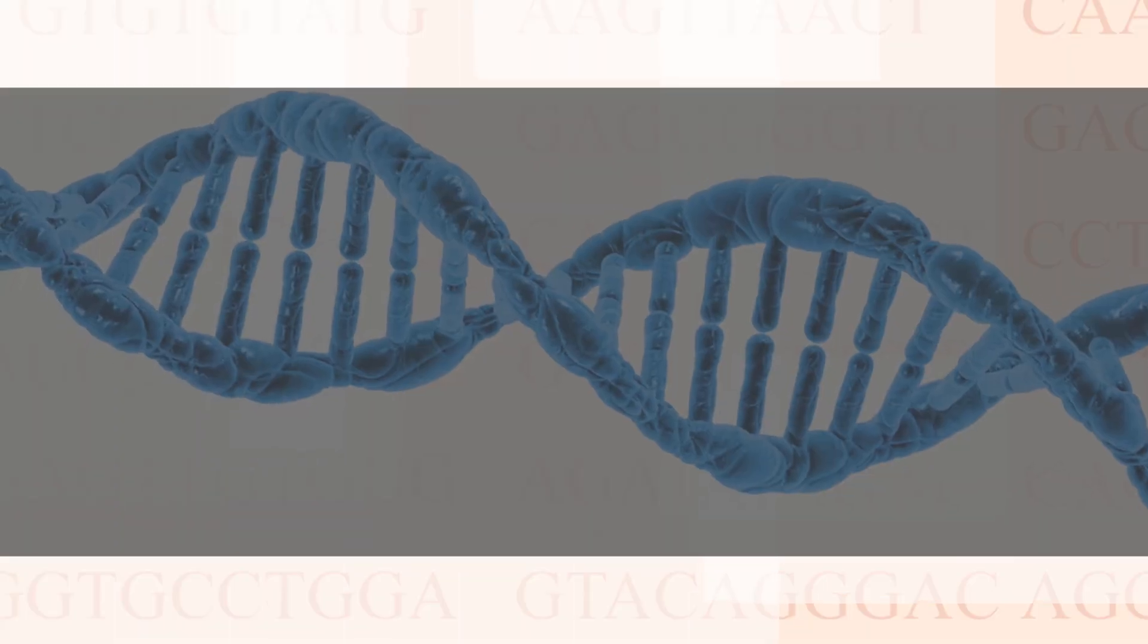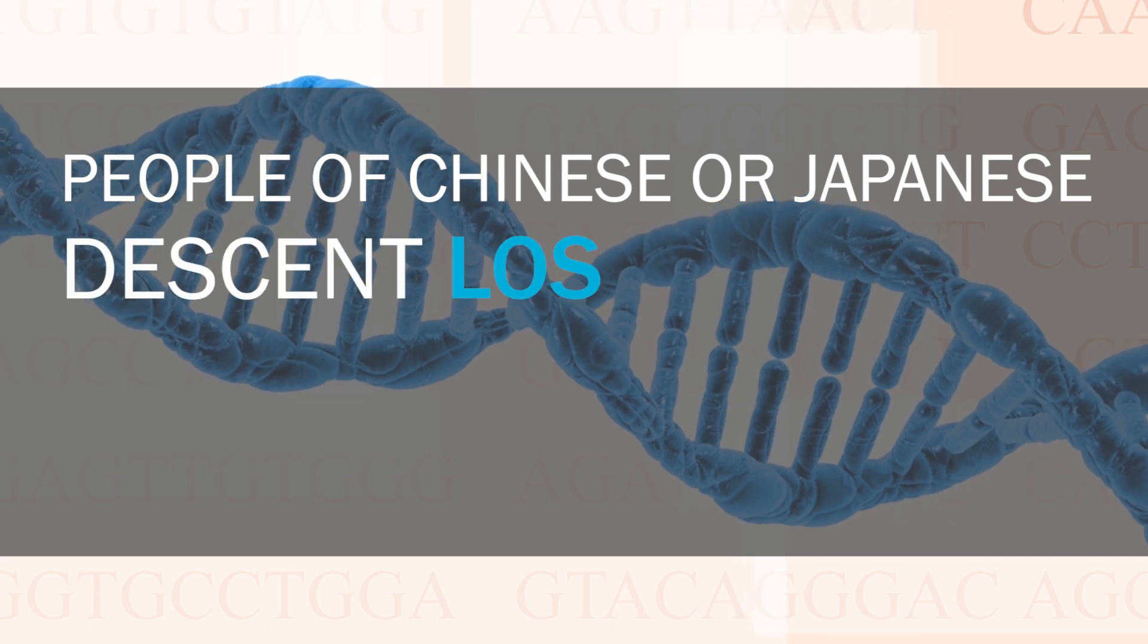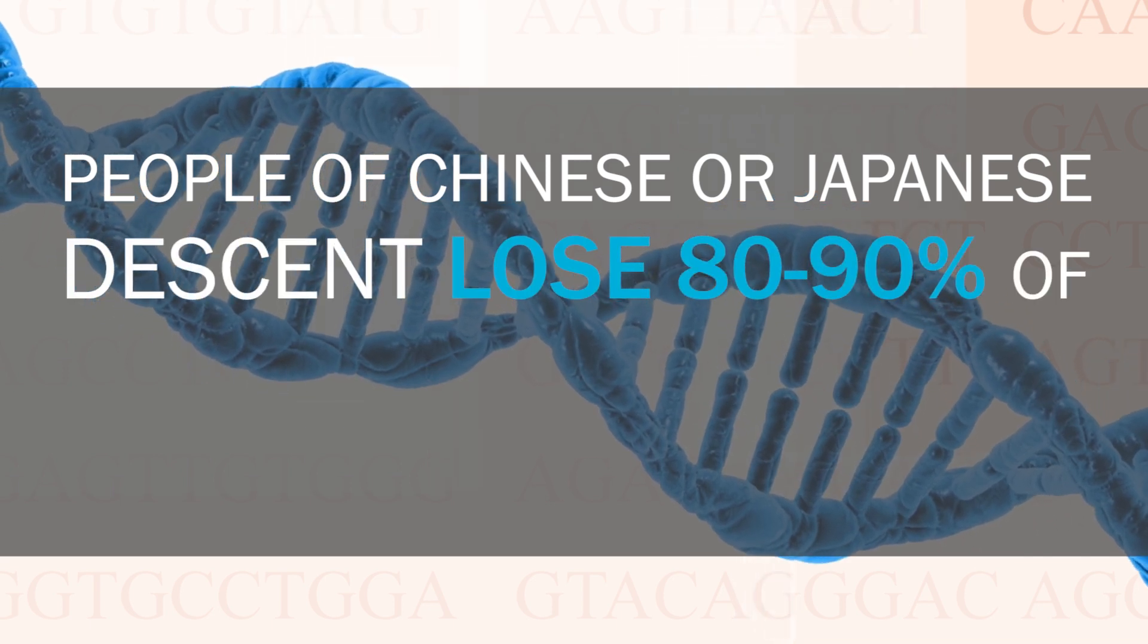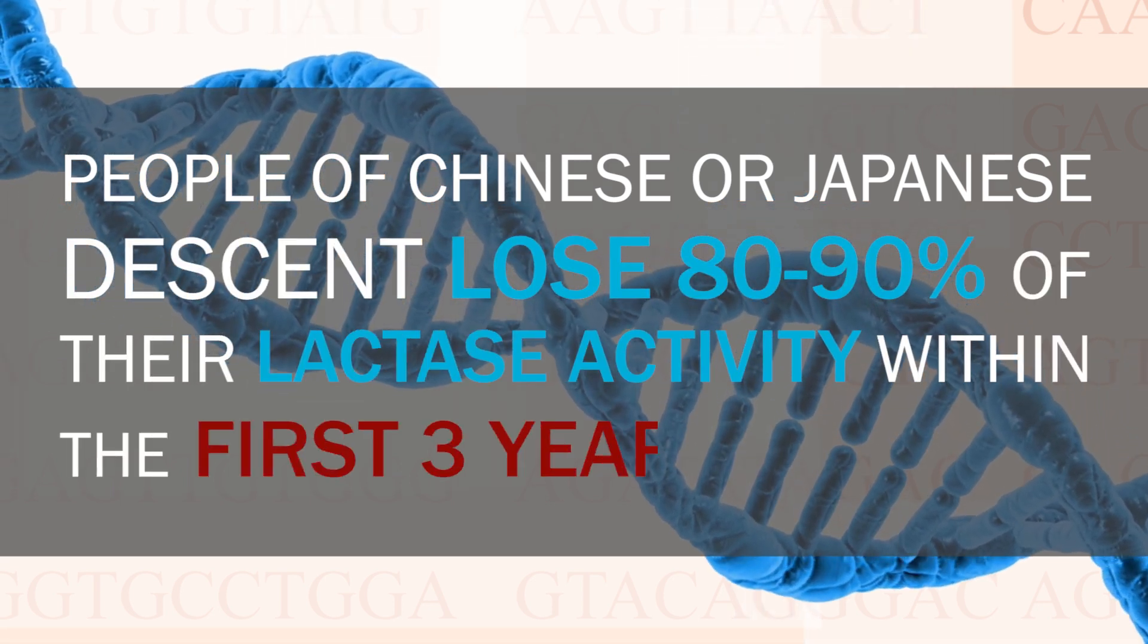What we now can observe in humans is that the activity of lactase starts to decrease within the first few months of life. In lactose intolerant people, however, lactase activity completely diminishes upon adolescence. To give an example, people of Chinese or Japanese descent lose 80-90% of their lactase activity within their first few years.